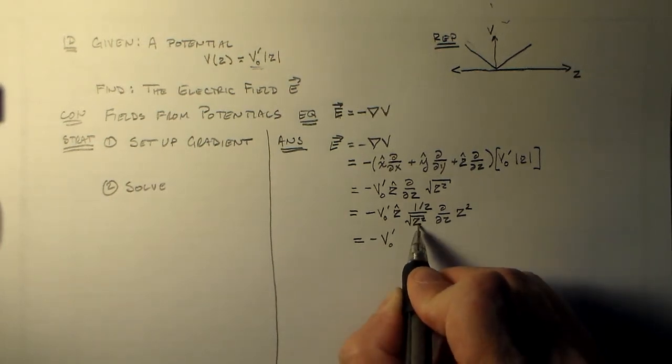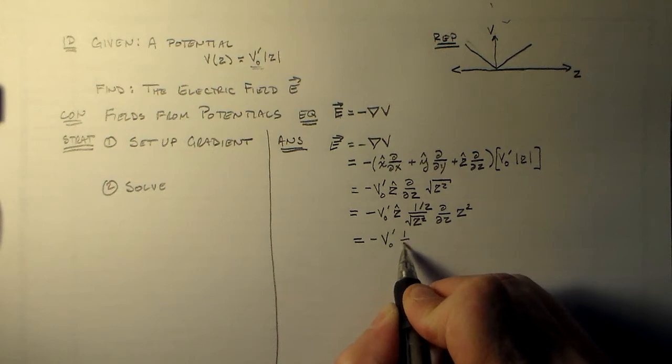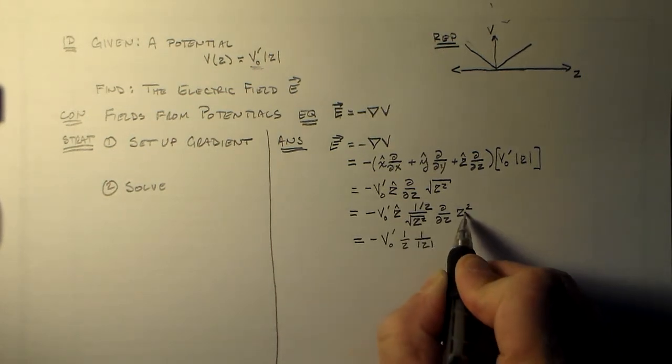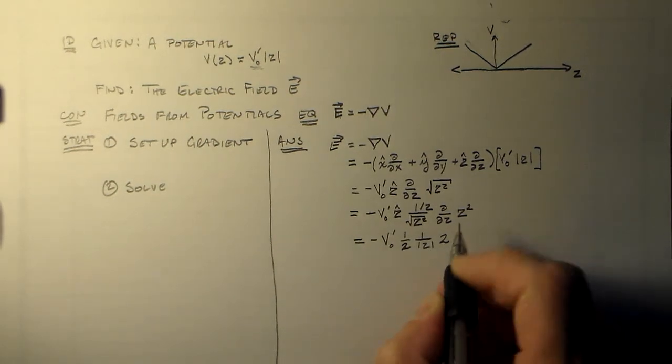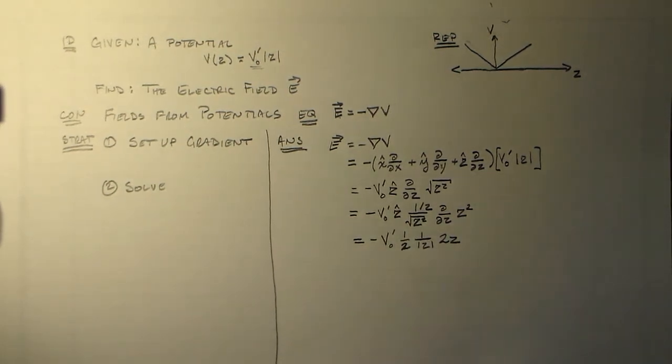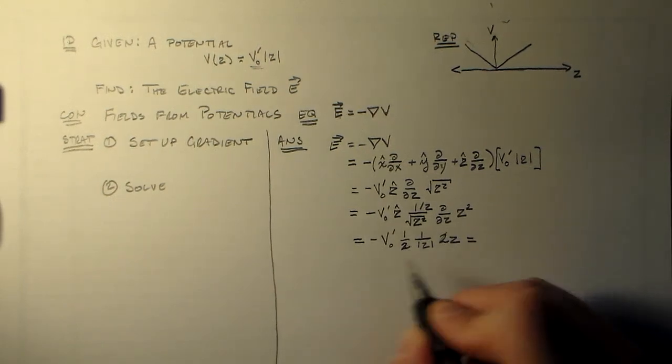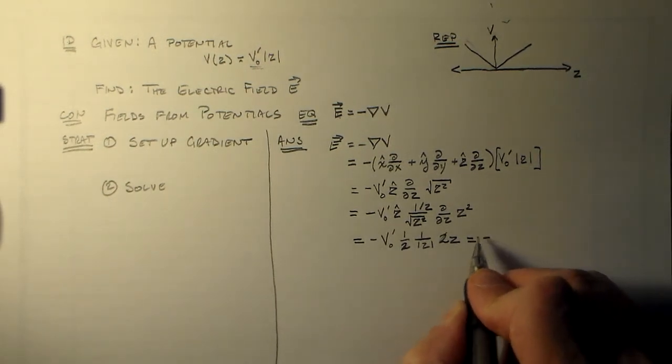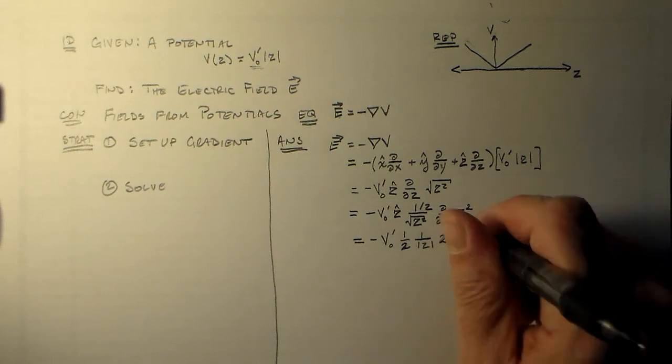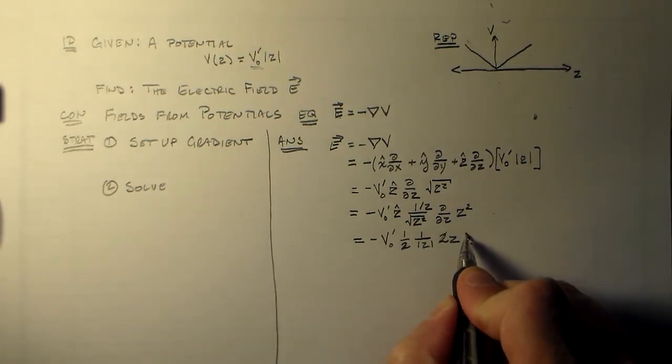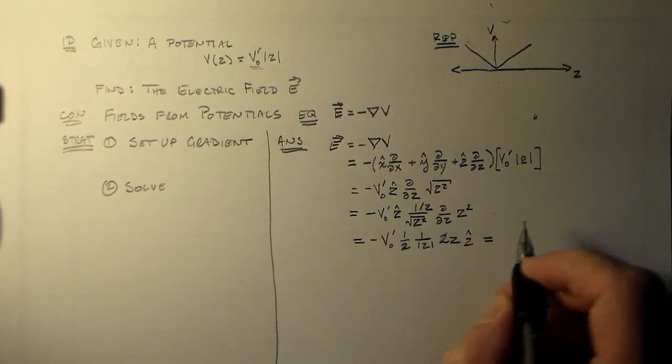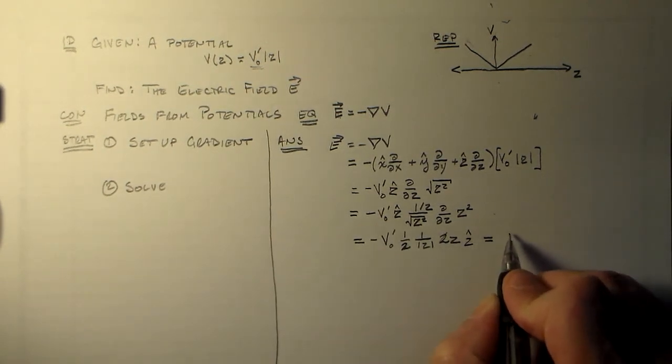That's minus V naught prime. This thing is just the absolute value of Z, right? So we have 1 half times the absolute value of Z, and this derivative is 2Z. So there's a 2, there's a Z, a 2Z there. And cancelling 2's and all sorts of other fun things that we have to do, which include not forgetting the direction.